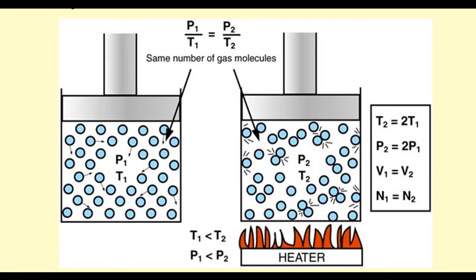The results of this experiment are quite easy to understand. As the gas is heated, the gas particles are going to gain kinetic energy. Because they have more kinetic energy, they're going to be moving faster. They're going to be hitting the sides of the container — the insides of the jolly bulb — more frequently and with a greater force. This is going to increase the pressure on the inside of the jolly bulb.